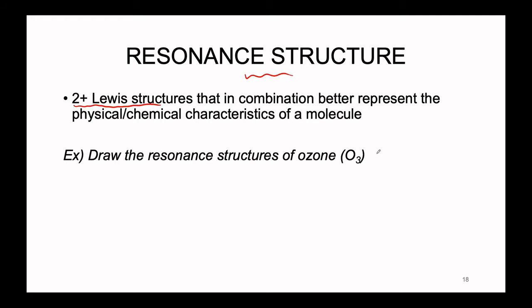It becomes obvious when we follow the steps previously outlined. If we go through and draw a molecule, there's going to be a point where we have to make a choice and one picture is not good enough. For instance, with ozone — O3, no charge — we're going to follow our rules to draw the Lewis structure and see the fork in the road where we have to pick one structure or the other. Our valence electron count: each oxygen has six valence electrons, there are three oxygens, giving us 18 valence electrons total. There's no charge, so we don't need to modify this count.